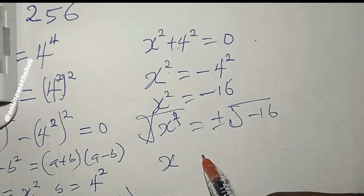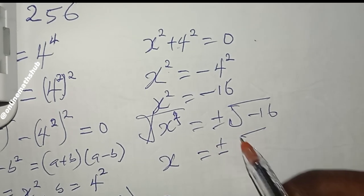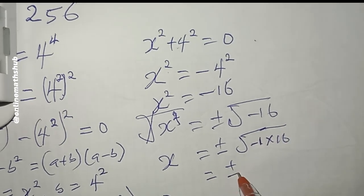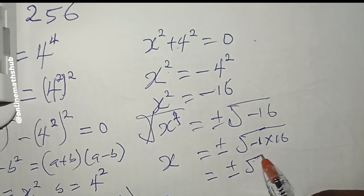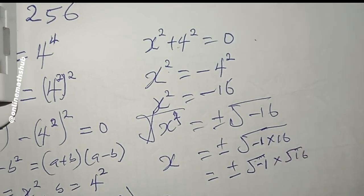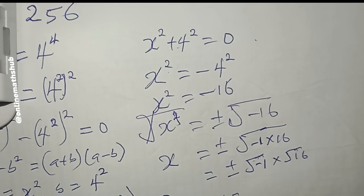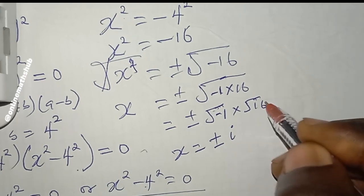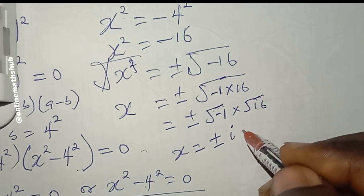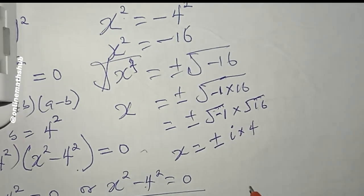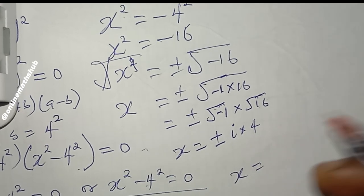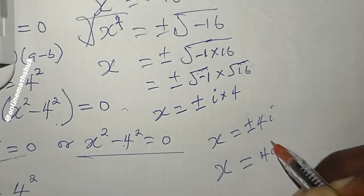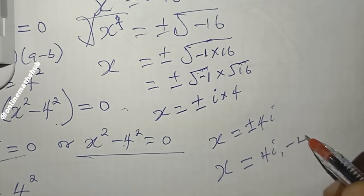We can write negative 16 as negative 1 multiplied by 16. So x equals plus or minus the square root of negative 1 times the square root of 16. Since the square root of negative 1 equals i, and the square root of 16 equals 4, we get x equals plus or minus 4i. So the remaining two values of x are positive 4i and negative 4i.